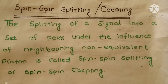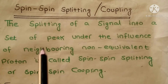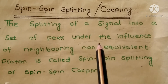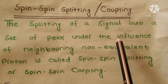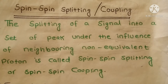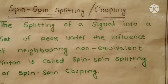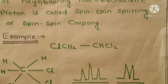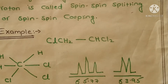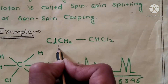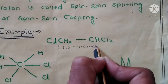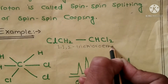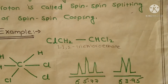That type of splitting in which one set of protons splits due to the influence of another set of protons is called spin-spin splitting. To understand spin-spin splitting, we can take the example of 1,1,2-trichloroethane.